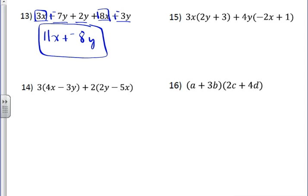Problem 14, you're going to just do the distributive property first. Whenever you can do the distributive property, you should. 3 times 4x, 3 times negative 3y.